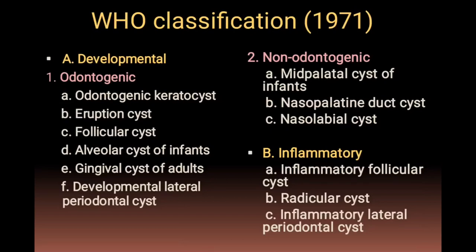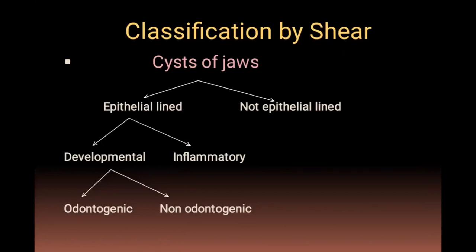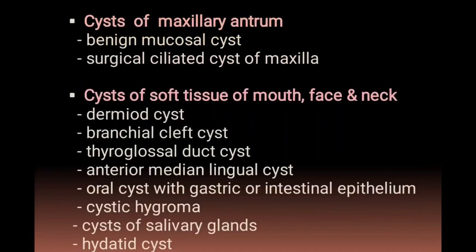Non-odontogenic developmental cysts include mid-palatal cyst of infants, and inflammatory cysts include follicular cyst, radicular cyst, and lateral periodontal cyst. The Shear classification is simpler: epithelial-lined and non-epithelial-lined. Epithelial-lined cysts are subdivided into developmental and inflammatory, with developmental further divided into odontogenic and non-odontogenic. Non-odontogenic includes cysts of the maxillary antrum, such as benign mucosal cyst or surgical ciliated cyst of maxilla, and cysts of soft tissues of the mouth, face, and neck.